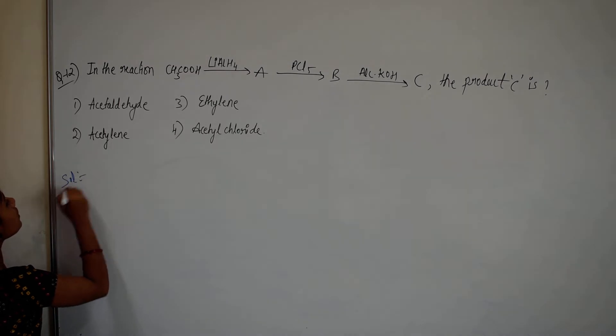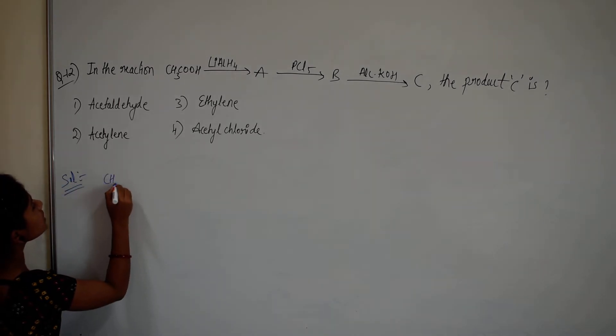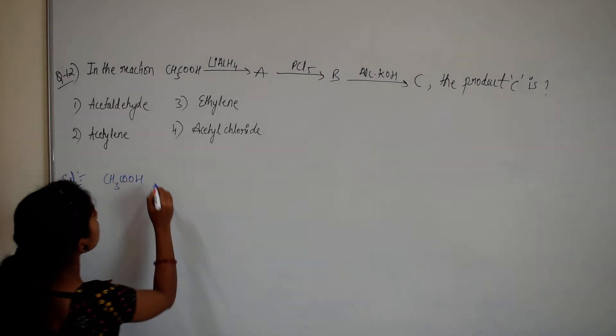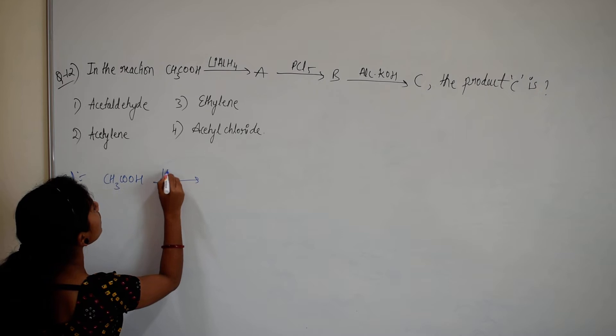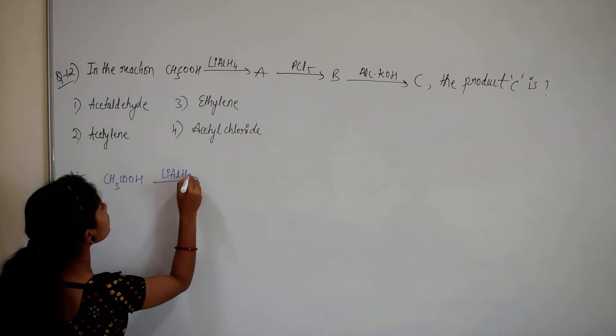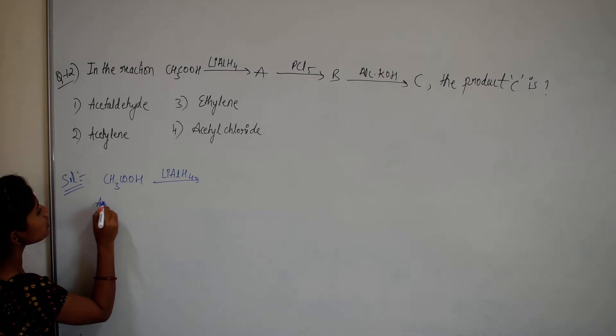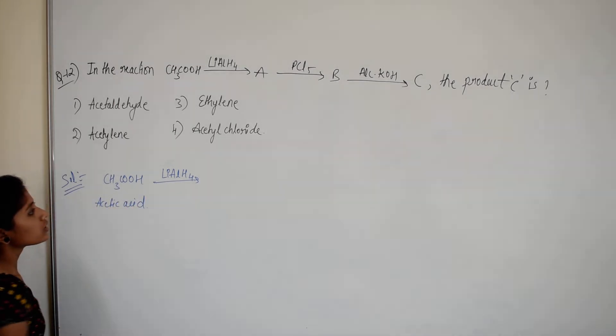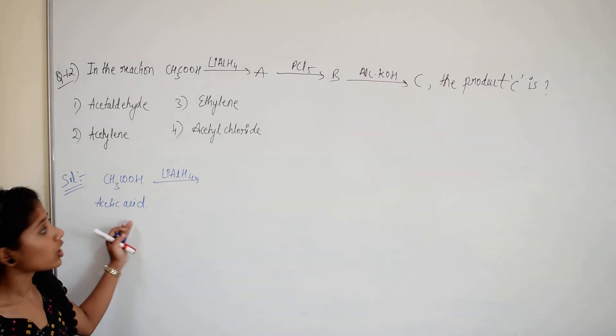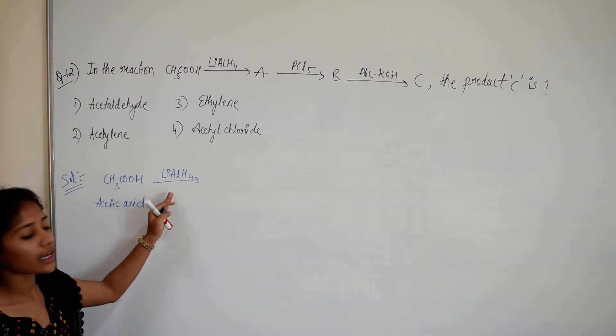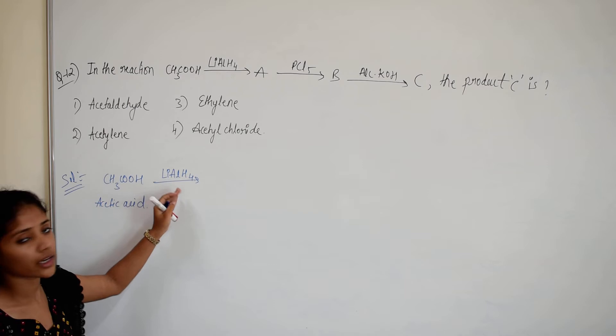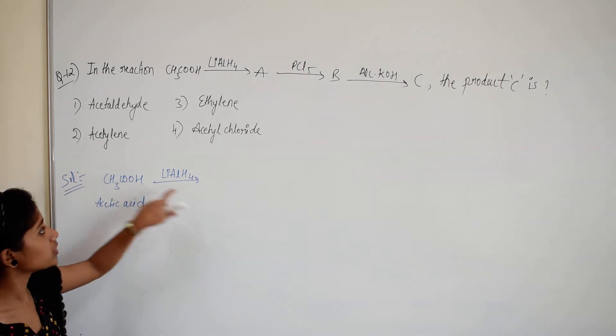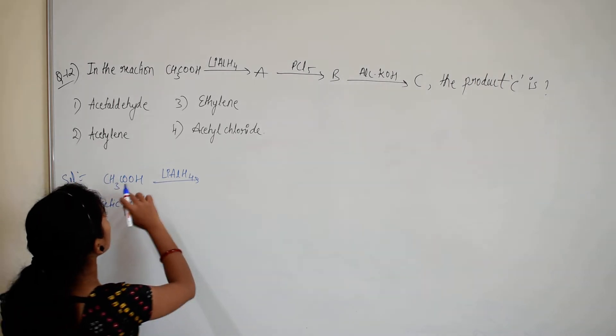CH3COOH is reacting with LiAlH4. So carboxylic acid is reacting with LiAlH4. Lithium aluminum hydride is a strong reducing agent, so this will reduce this carboxylic acid into alcohol.